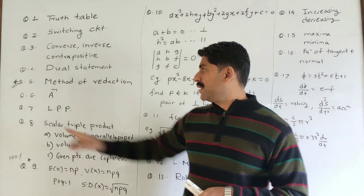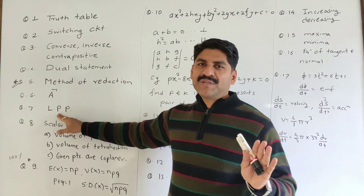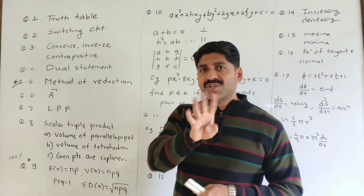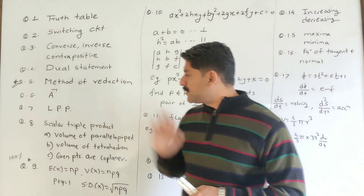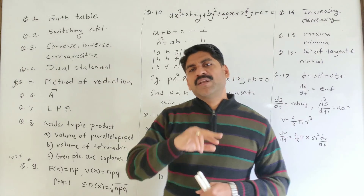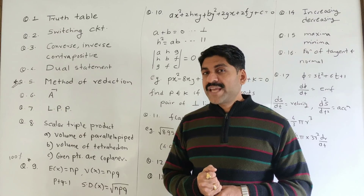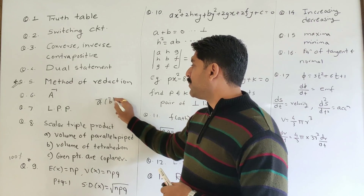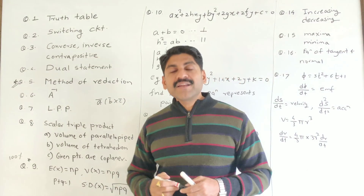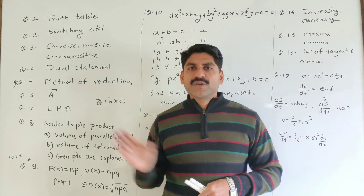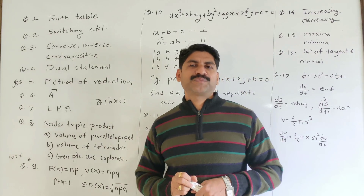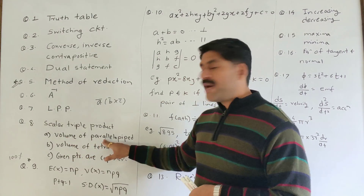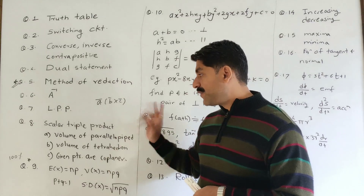For linear programming — simple graph and solutions, maximize the objective function. For vectors, we cover bar, dot, and cross products. To solve using the determinant, we find the volume of the tetrahedron defined by given points.